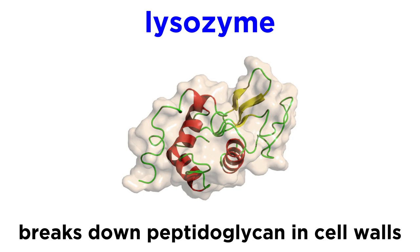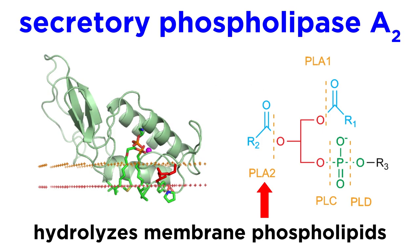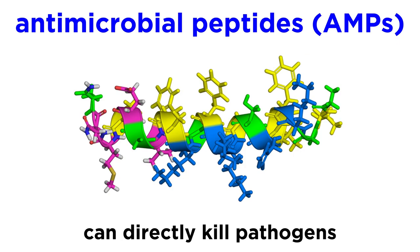These can include antimicrobial enzymes like lysozyme, which can break down the peptidoglycan in bacterial cell walls, and secretory phospholipase A2, which can disrupt bacterial cell membranes by hydrolyzing membrane phospholipids. These can also include small peptides called antimicrobial peptides, or AMPs, that can directly kill pathogens.